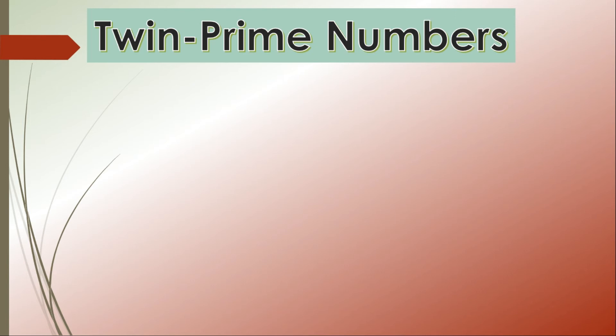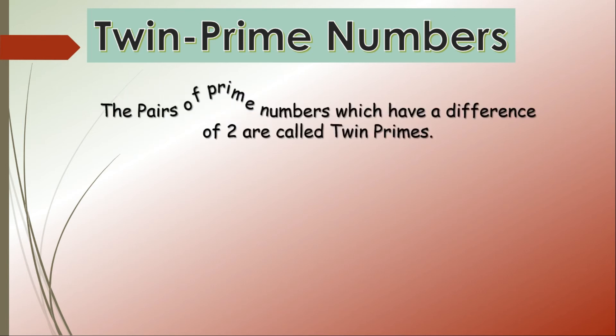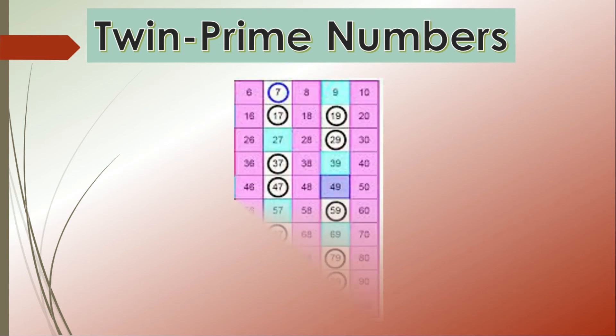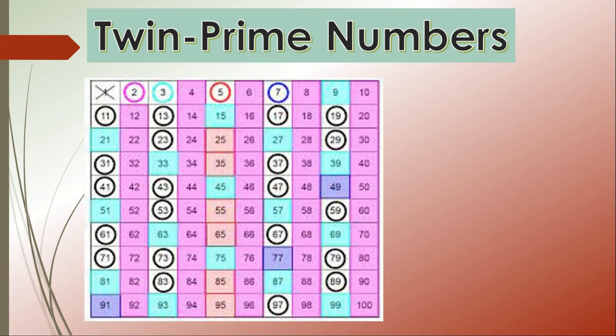Now let us see what are twin prime numbers. The pair of prime numbers which have a difference of 2 are called twin primes, or we can say that the prime numbers which have only one composite number between them. Let us see through the help of sieve of Eratosthenes.